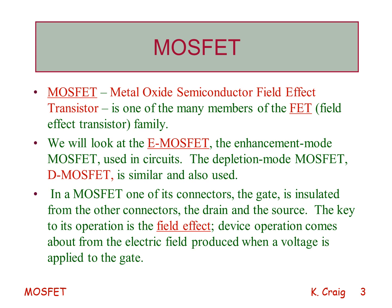The depletion mode MOSFET, the D MOSFET, is similar and is also used. In a MOSFET, one of its connectors — the gate — is insulated from the other connectors, the drain and the source. The key to its operation is the field effect. Device operation comes about from the electric field produced when a voltage is applied to the gate. This is a voltage-controlled device.